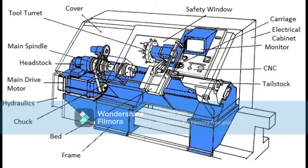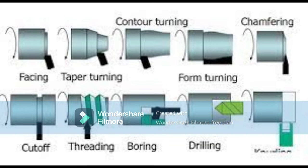CNC lathes are capable of performing a wide variety of operations including turning, which involves rotating the workpiece and using a cutting tool to remove material; facing; drilling; tapping; knurling; milling, which involves using a milling tool to remove material from the workpiece; and grinding, which involves using a grinding tool to remove material.